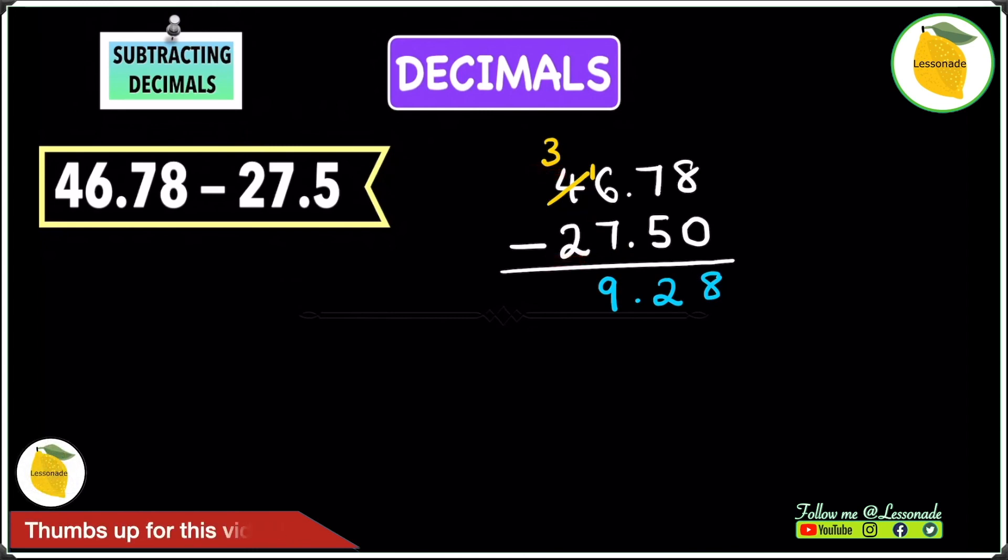16 minus 7 will become 9, and then 3 minus 2 is 1. That means our answer to this question is 19.28.